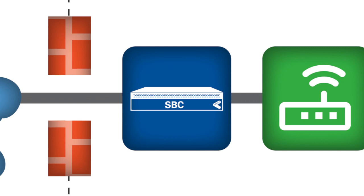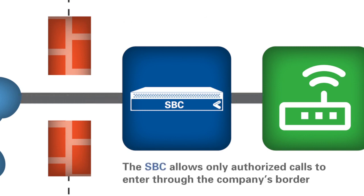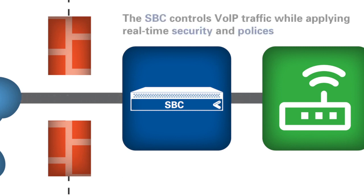Enter the session border controller. In simplest terms, an SBC is a device dedicated to governing phone calls on a VoIP network. Essentially, the SBC allows only authorized calls — also known as SIP traffic — to enter through the company's border, which is between trusted and untrusted networks. The SBC controls VoIP traffic while applying real-time security and policies, thus helping your firewall do its job.